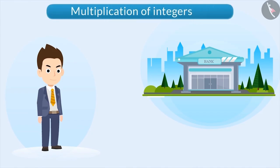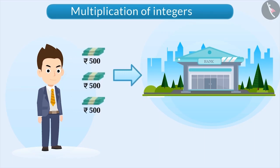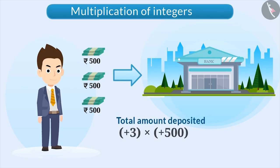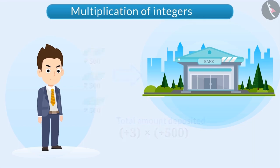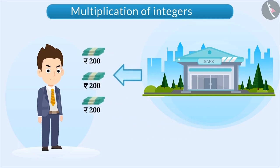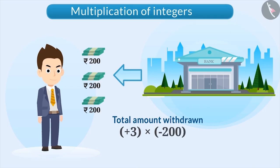For example, if a person deposits 500 rupees three times in a bank account, then the amount deposited can be found by the product of positive 3 and positive 500. Similarly, if he withdraws 200 rupees three times from his account, then the amount withdrawn can be found by the product of 3 and minus 200. In such situations, it is necessary to understand the multiplication of integers.